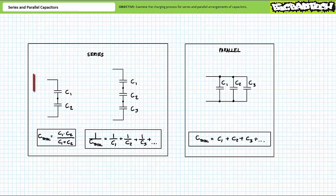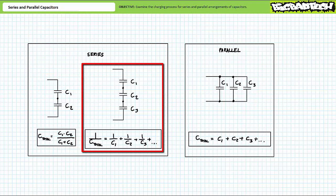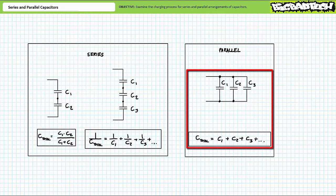To calculate the total capacitance of a series arrangement of two capacitors, C1 and C2, multiply C1 times C2 and divide it by C1 plus C2. If you're presented with a series combination of three or more capacitors, one over the total capacitance equals one over C1 plus one over C2 plus one over C3 and so on. For a parallel combination of capacitors, total capacitance equals C1 plus C2 plus C3 and so on.